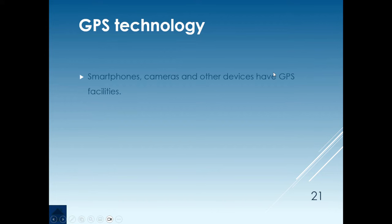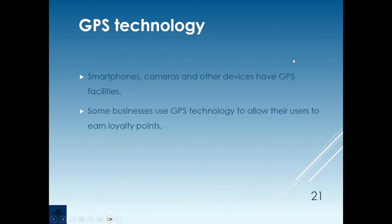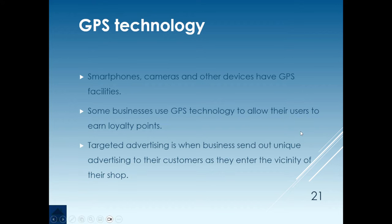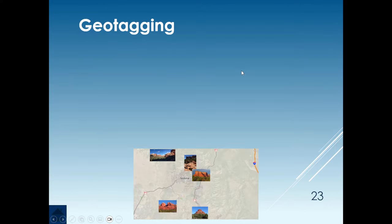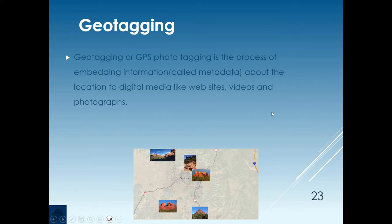Then we have GPS technology, found on smartphones, cameras, and a whole range of devices. Some businesses use GPS technology to allow users to earn loyalty points when they are detected near a particular shop. There's also targeted advertising, where businesses send unique advertising to customers as they enter the vicinity of a store. A GPS device used to be a physical device on its own, but now it's built into almost everything we use.